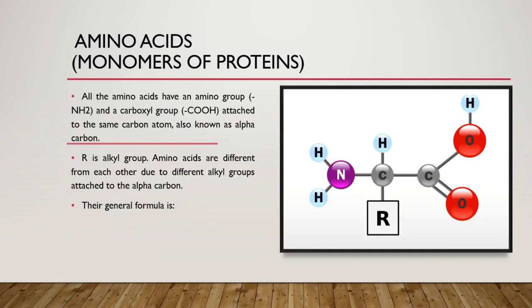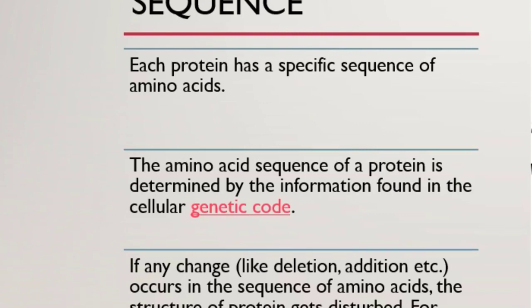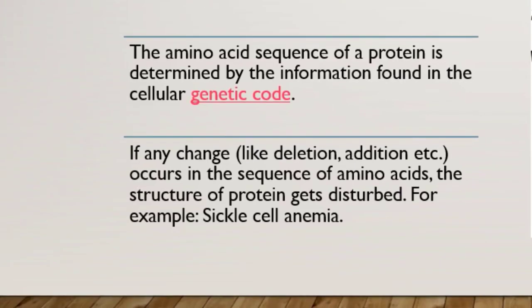ہر protein کے اندر amino acids کا ایک specific sequence ہوتا ہے. And this specific sequence of amino acids determines the structure of a protein. Genetic code is responsible for the specific sequence of the amino acids in the protein. اگر کسی بھی طرح کا change جیسا کہ amino acids کی addition، deletion، یا position change ہو جائے تو amino acids کا sequence disturb ہو جاتا ہے.